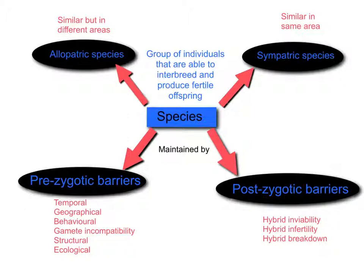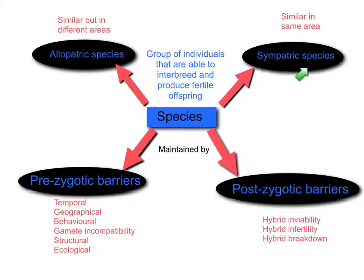To summarise: pre-zygotic barriers prevent a zygote from forming in the first place, while post-zygotic barriers prevent a zygote from remaining fertile over time and being able to maintain its own population. Next, we'll look at the difference between allopatric speciation and sympatric speciation.